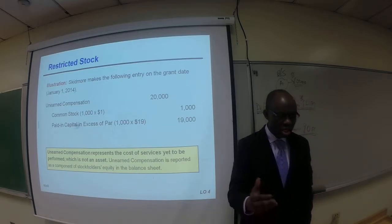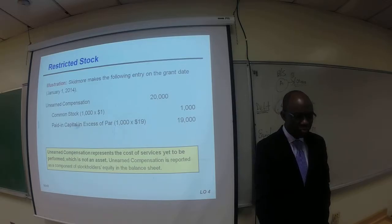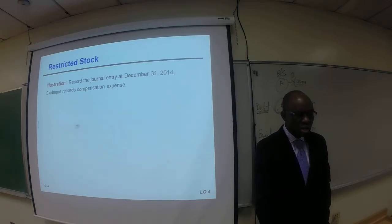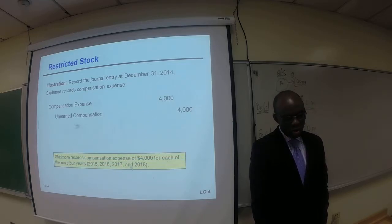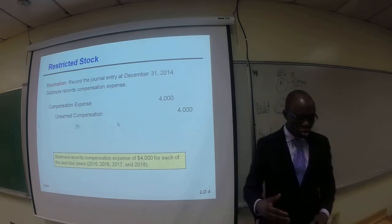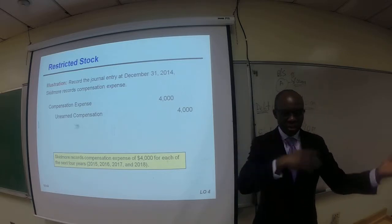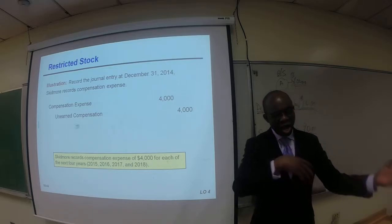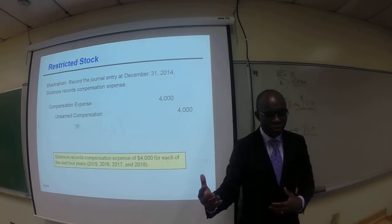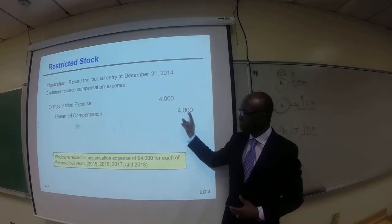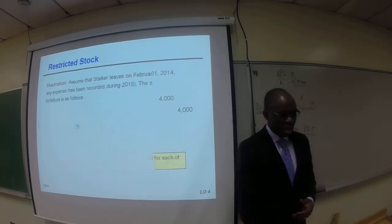Now, the journal entry to record the compensation expense: compensation expense is $4,000, and unearned compensation is $4,000, for each of the next five years. So $4,000 multiplied by 5 gives you $20,000 total compensation expense. We debit compensation expense for $4,000 and credit unearned compensation for $4,000. By crediting unearned compensation for $4,000 every year for five years, at the end of the fifth year the unearned compensation account will be $0.